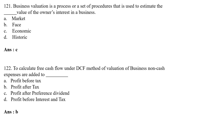Business valuation is a process or a set of procedures used to estimate the dash value of the owner's interest in a business — Option A: market; Option B: face; Option C: economic; Option D: historic. The correct answer is Option C — economic. Business valuation is a process or set of procedures used to estimate the economic value of the owner's interest in the business.